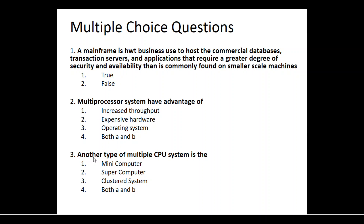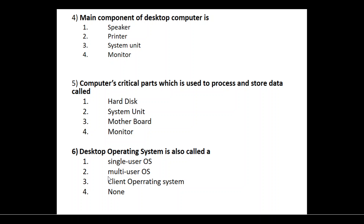Third question: Another type of multiple CPU system is — apart from multiprocessor systems, mini computers are not the answer. Supercomputers are computers that make use of multiple CPUs, so that is the answer. Fourth question: The main component of desktop computers — which are used for personal use at home or in college — among speaker, printer, system unit, and monitor, the main component is the system unit.